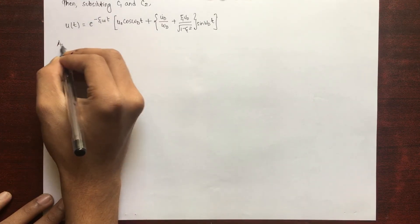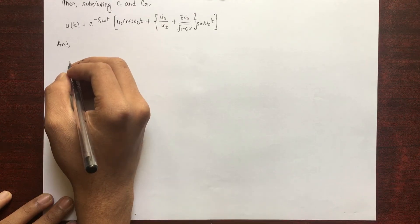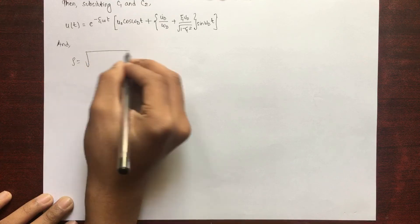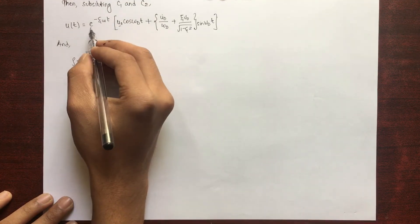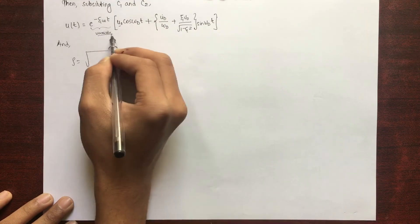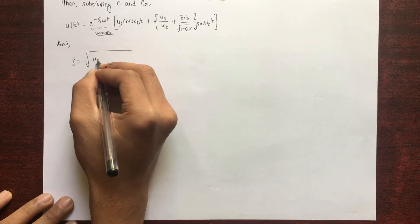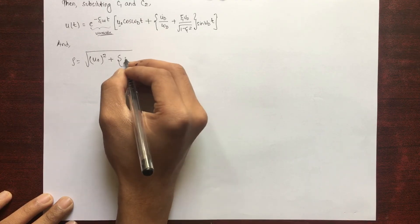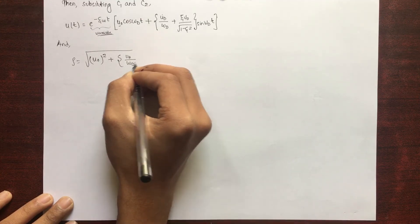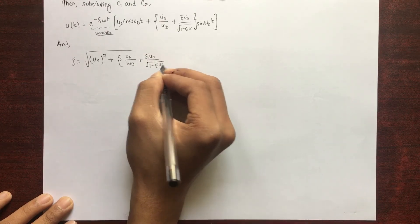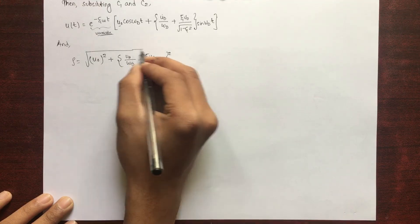Now let's find the peak value — the amplitude ρ. The amplitude is ρ = √(A² + B²). So ρ = √[u(0)² + ((u̇(0)/ω_d) + (ξ·u(0) / √(1 − ξ²)))²]. This is the amplitude value.